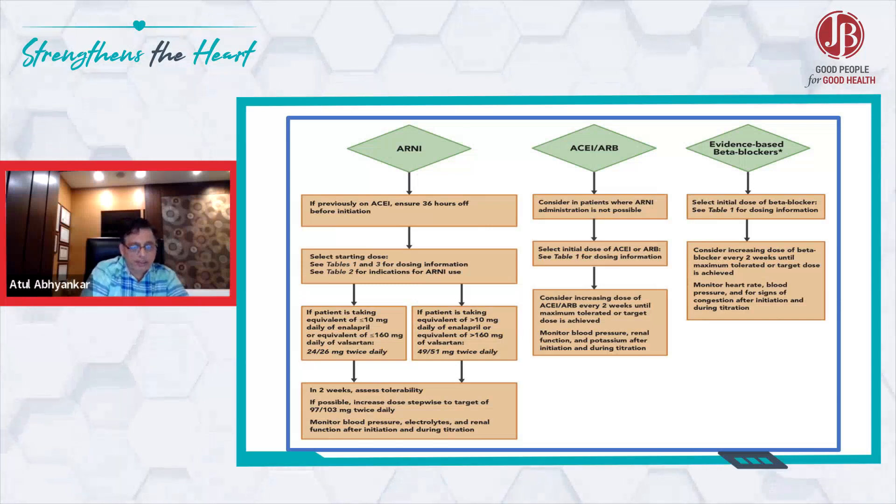If the patient is taking a higher dose of enalapril or valsartan, then we start with 100 milligrams twice daily. Now after two weeks, if the patient is doing okay and there is no issue of tolerability, then you increase the dose stepwise to a target of 200 milligrams twice daily.